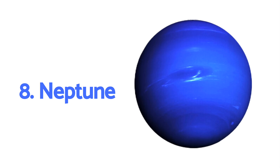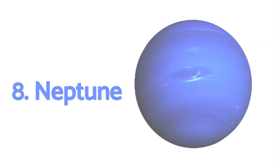Neptune is the last planet from the Sun in our solar system. Just like Uranus, it's very cold and blue in color.